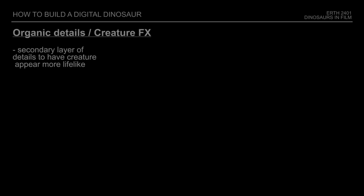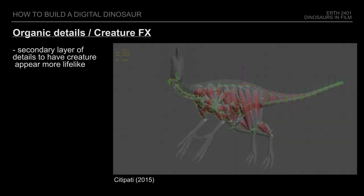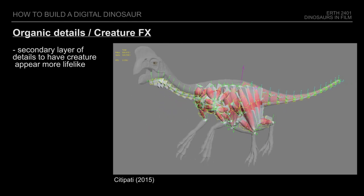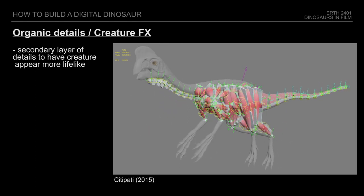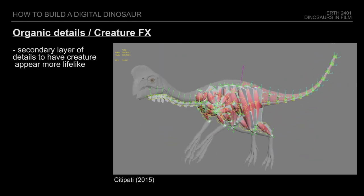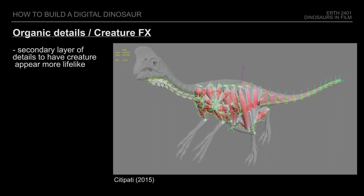The next step is to add organic details like secondary movement in order to help the dinosaur's surface and mass appear to behave more realistically. Looking at this example, you can see the x-ray highlighting additions such as primitive muscles, or the neck reacting to the dinosaur's body movement.